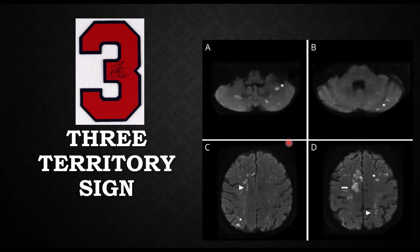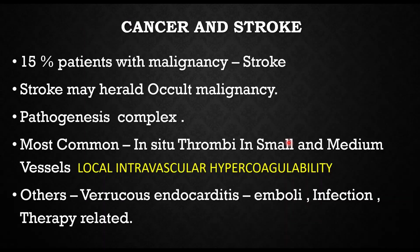The Three Territory Sign is associated with Trousseau syndrome, also known as cancer-associated hypercoagulable state. Cancer and stroke share an intimate relationship — around 15% of patients with malignancy will eventually develop stroke. Sometimes stroke may even herald an occult malignancy, but the pathogenesis of stroke in malignancy is complex.